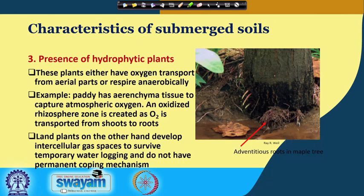The presence of hydrophytic plants is another characteristic of submerged soils. These plants either transport oxygen from aerial parts or can respire aerobically. For example, adventitious roots of maple trees and the aerenchyma tissue in paddy capture atmospheric oxygen. As oxygen is transported from shoot to roots, an oxidized rhizosphere zone is created.